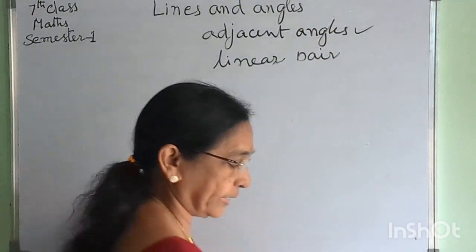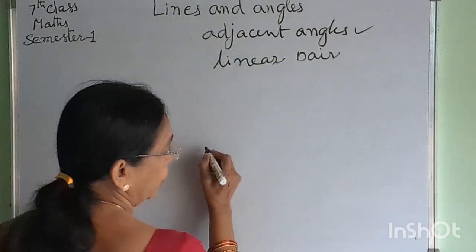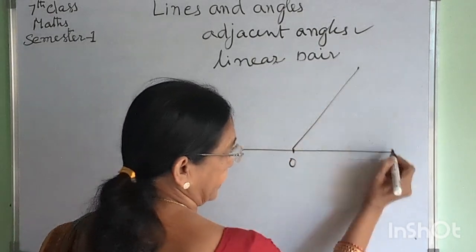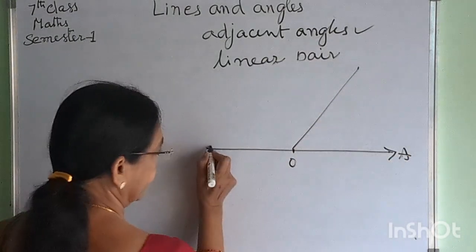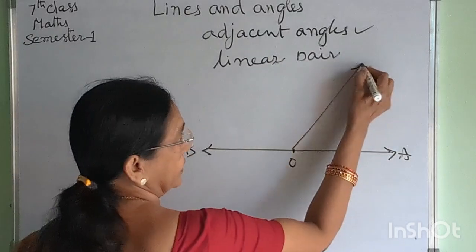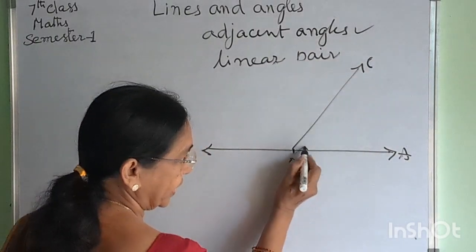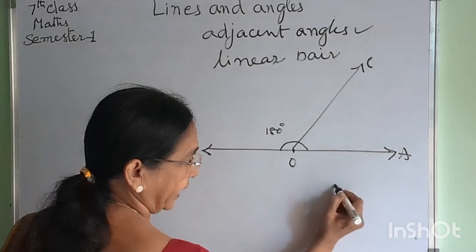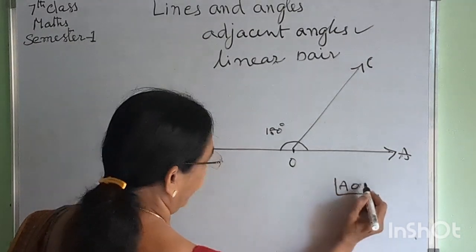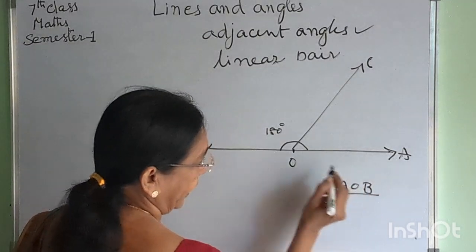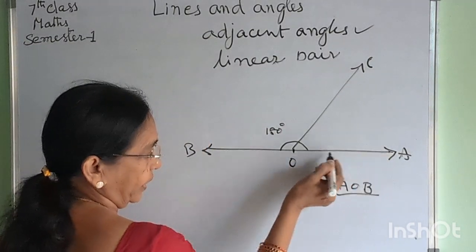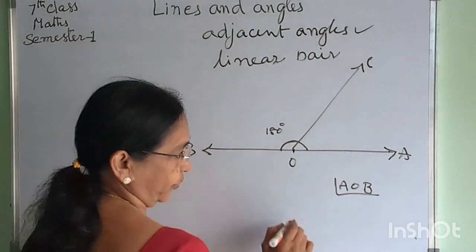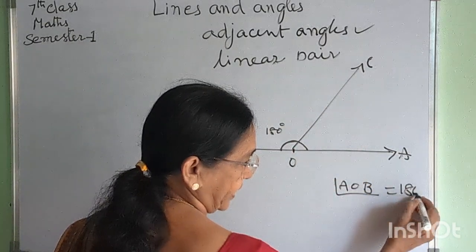Linear pair are two angles which form a straight line. Let point O have ray OA, ray OB, and ray OC. This total angle is 180 degrees — a straight angle. Angle AOB is 180 degrees, a straight angle.